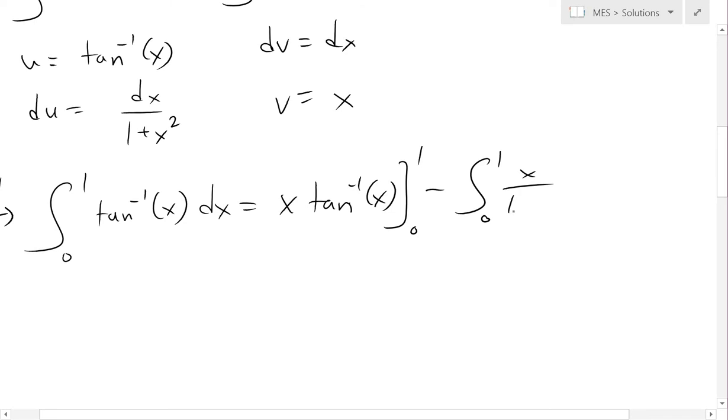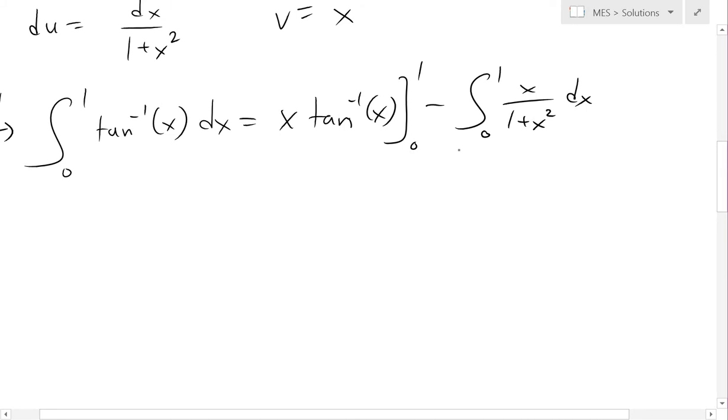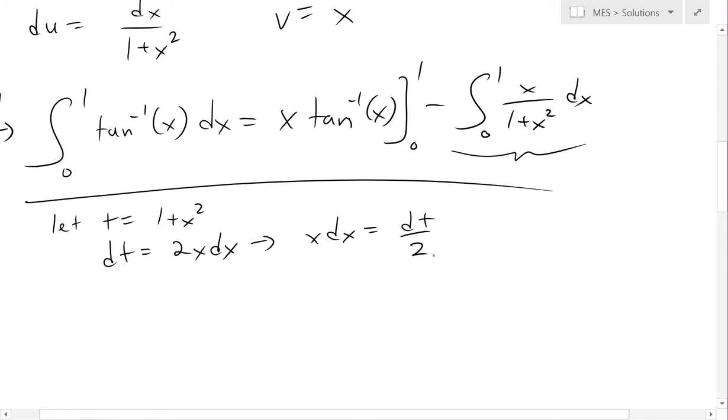So we have x, and then we have du right there, which is dx over 1 plus x squared. So now we have a simpler integral, which is right here, and we could actually use substitution rule for this one. If we let t equals 1 plus x squared, when we do this, dt would equal 2x dx. So we could write this in terms of t. We know that x dx equals dt over 2, so we've got rid of the top there, and now we've also got rid of the bottom; we're just left with t.